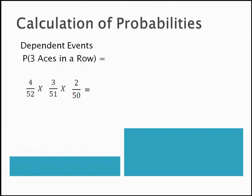Applying the multiplication rule, I end up with the probability of getting three aces in a row without replacement is 0.0181 percent. Not something I would bet on.